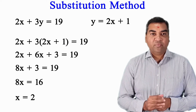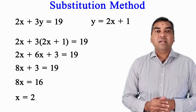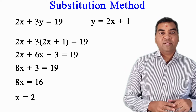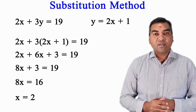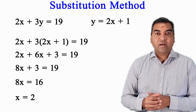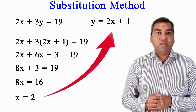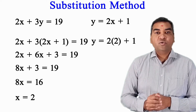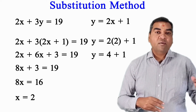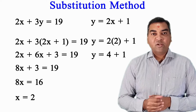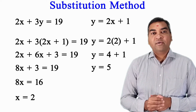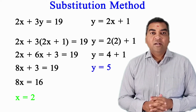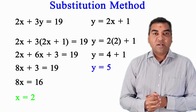Therefore x equal to 16 divided by 8, which is 2. So your x value is 2. Now substitute x equal to 2 back into the second equation: y equal to 2 times 2 plus 1, so y equal to 4 plus 1, so y equal to 5. My final answer is x equal to 2 and y equal to 5. This is how we solve using the substitution method.